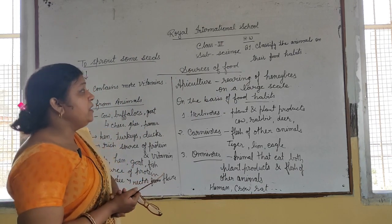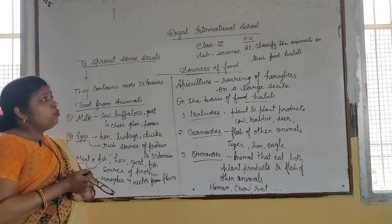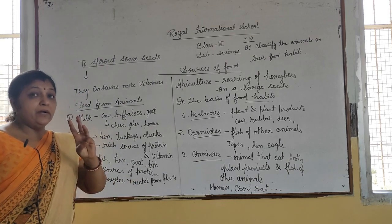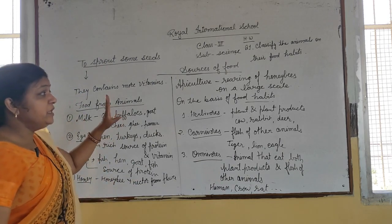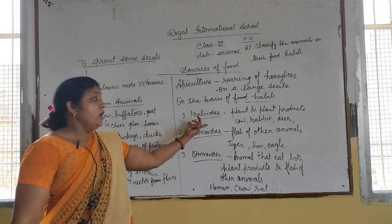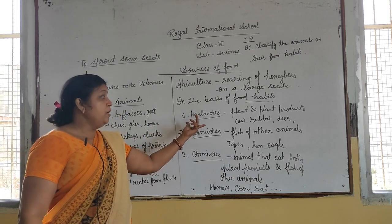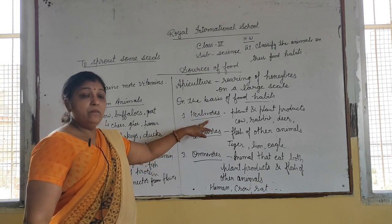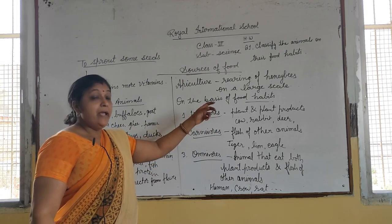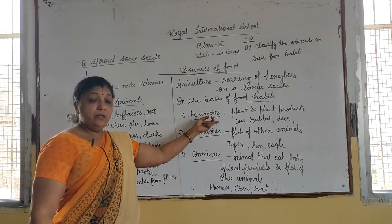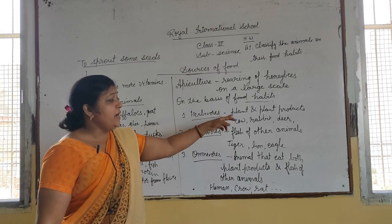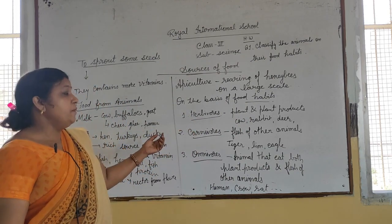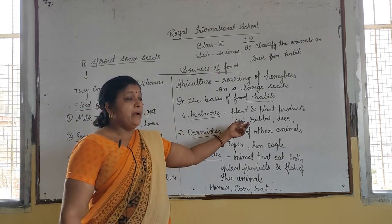Based on food habits, we have divided animals into three types. Number one: herbivores. Herbivores means plant-eaters — animals which eat plants and plant products are known as herbivores. Examples are cow, rabbit, and deer.